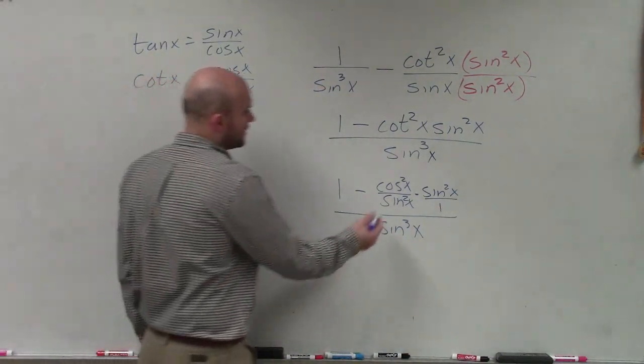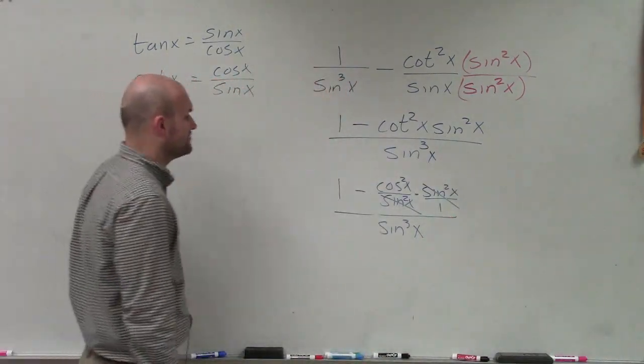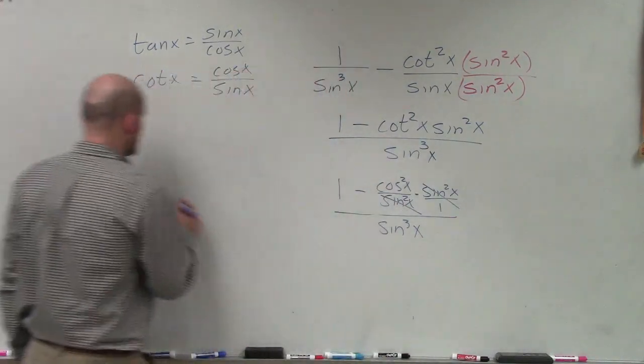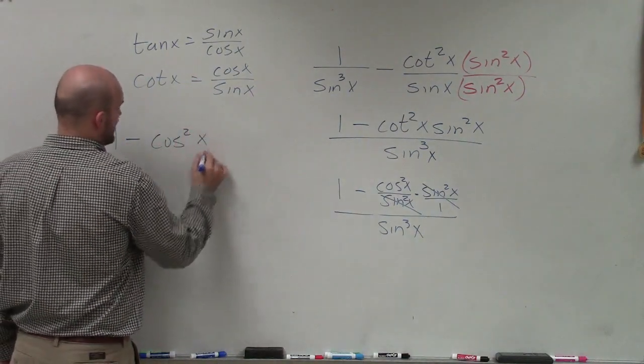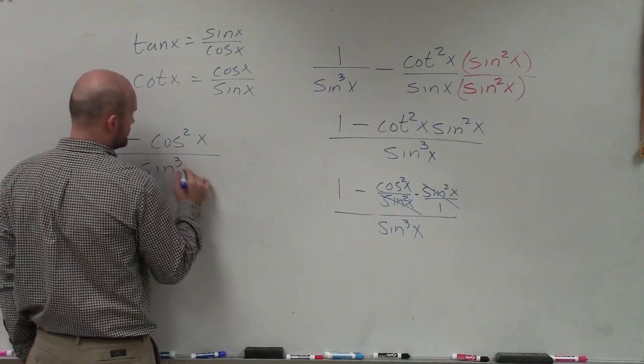Well here you can see that now my sine squareds are going to divide into 1. So I'm just left with 1 minus cosine squared of x divided by sine cubed of x.